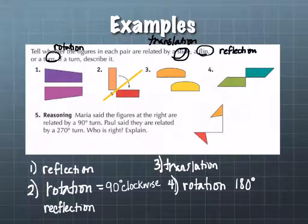Number five is a little bit different. Number five asks us to do some reasoning. It says, Maria says that the figures at the right are related by a 90-degree turn, and Paul says they are related by a 270-degree turn. Who is right? Explain. It depends on which way they're going. Brendan, I heard you say they're both right. You can say they're both right or they're both wrong. They don't have to do their direction, and they're technically wrong. That's true. In some sense, they didn't actually specify the direction, so they're actually not giving the full description anyway.